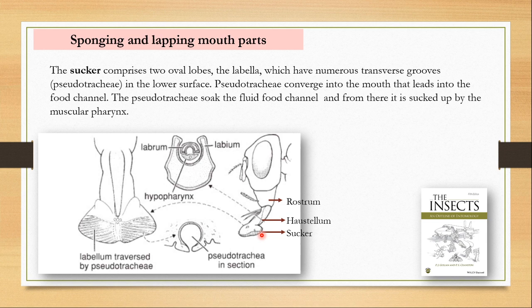The proboscis is made of the labrum and hypopharynx, enclosed by the labium. So the whole proboscis is a modification of the labium, and in the groove of the labium we have the labrum and the hypopharynx. That brings us to the end of this type of mouthpart.